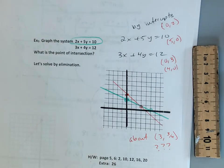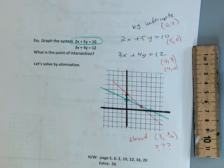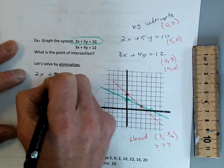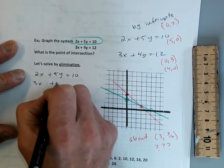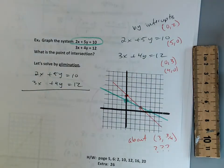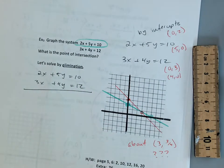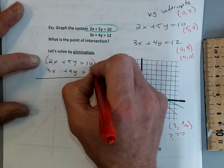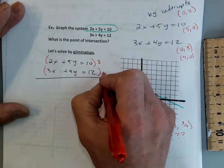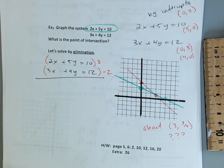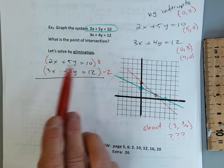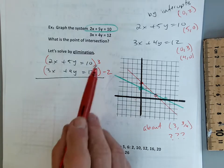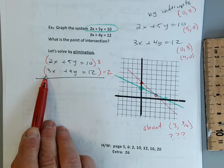So if we need the exact spot, we're going to use elimination — we did this in algebra, geometry, and algebra 2. If I multiply the top equation by 3 and the bottom equation by negative 2, the x terms become 6 and negative 6, which cancel, and then we can get y.